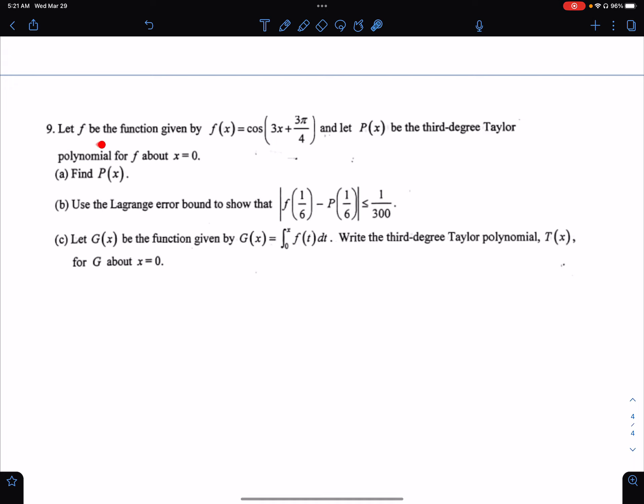let f be a function given by this cosine curve, and let P(x) be a third-degree Taylor polynomial about x equals zero. The first question is we want to find P₃(x), the Taylor series for this question right here.